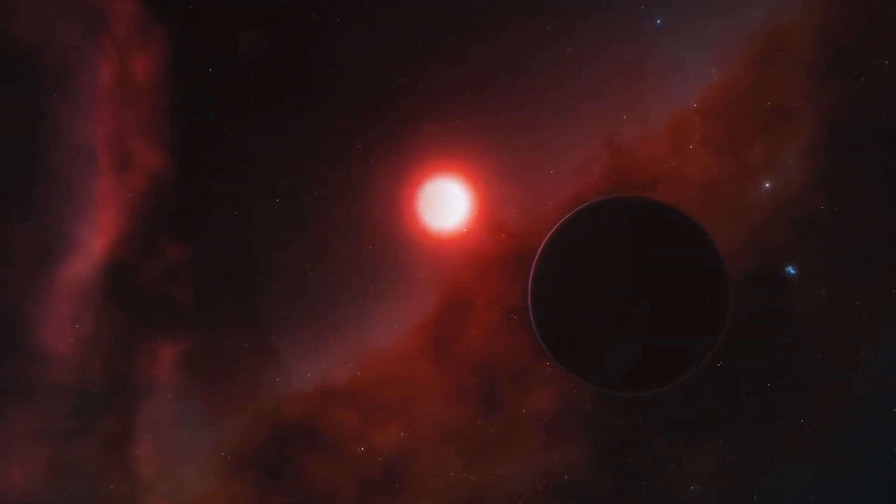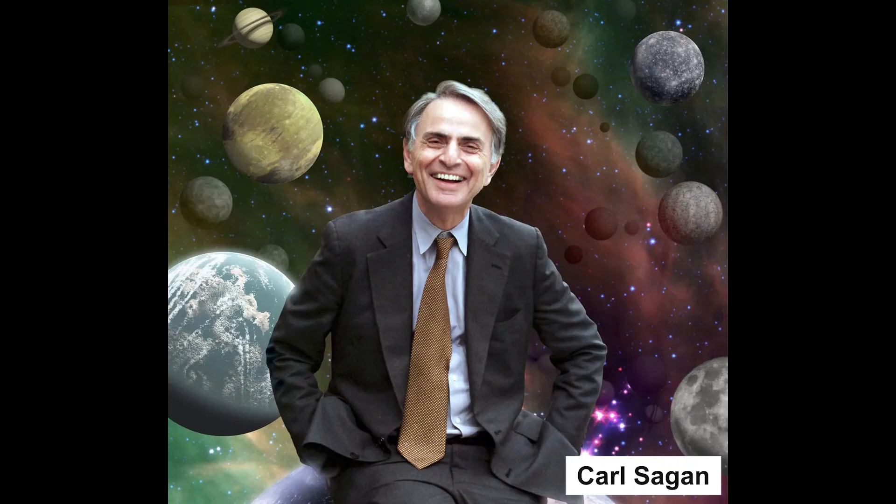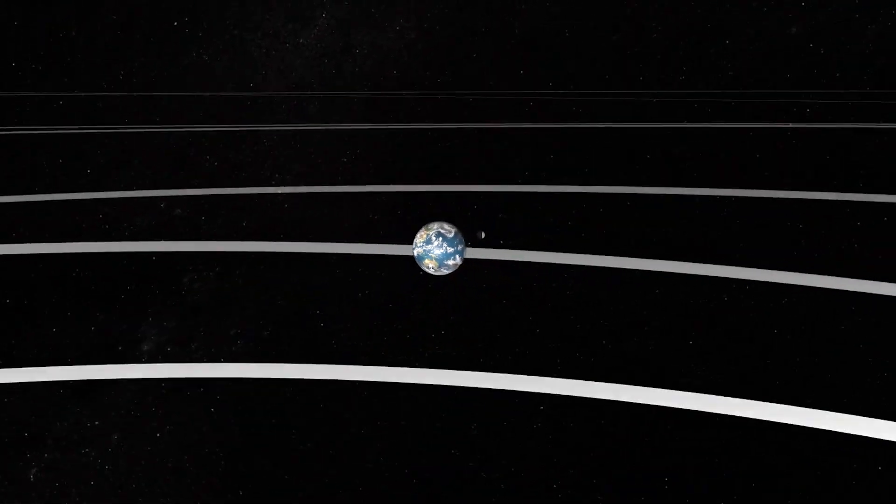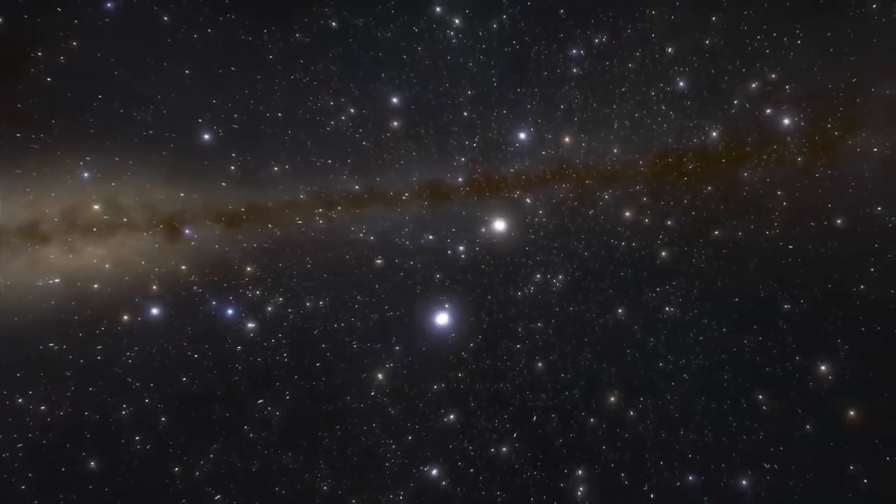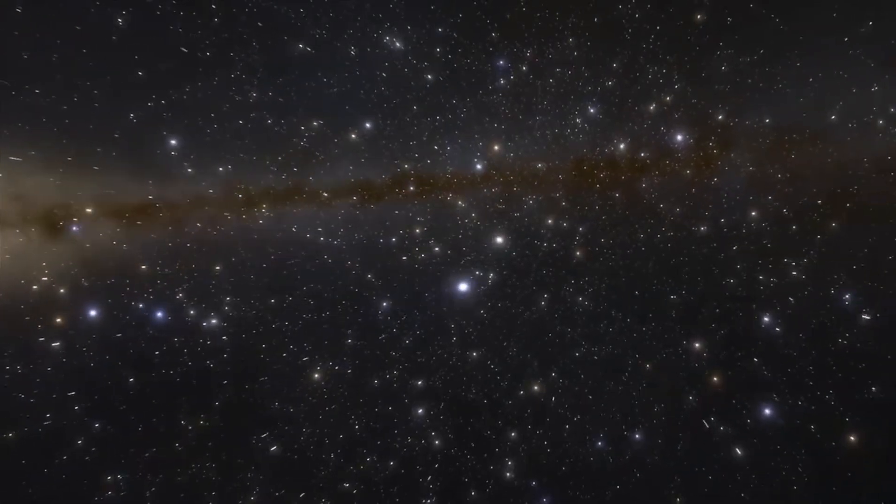For decades, scientists, including the legendary Carl Sagan, suggested that our solar system was a run-of-the-mill star system. Nothing too out of the ordinary, just a regular old set-up in the vastness of the galaxy.